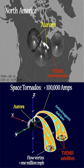Space tornadoes are made up of plasmas, consisting of extremely hot ionized gases that rotate at extremely high speeds, some recorded at over 1 million miles per hour. Within its funnel, they also generate strong electrical currents of about 100,000 amperes.